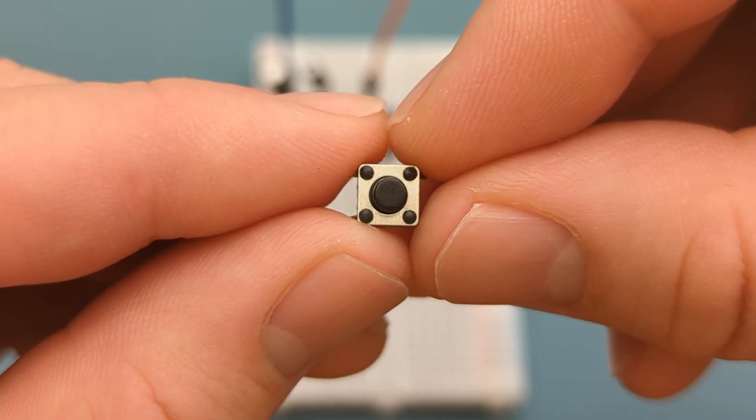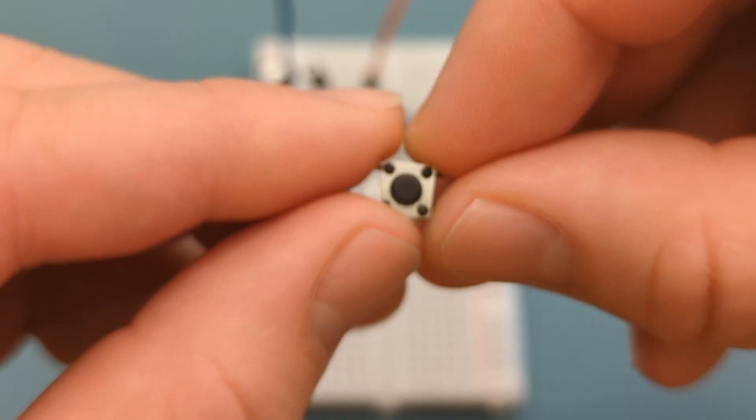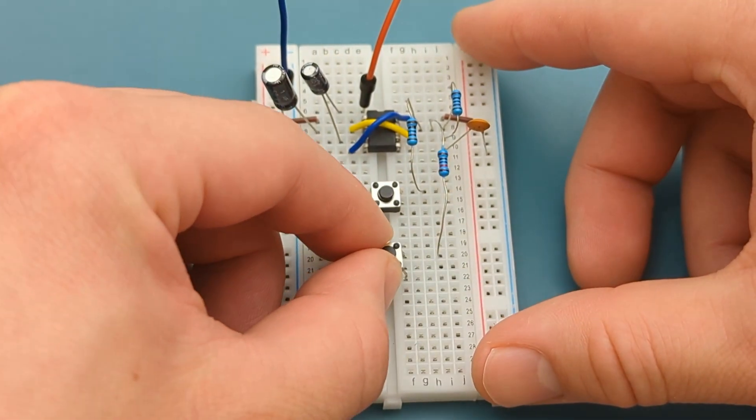Insert another switch in the middle of the breadboard. One leg is in the same row as the 10,000 ohms resistor.